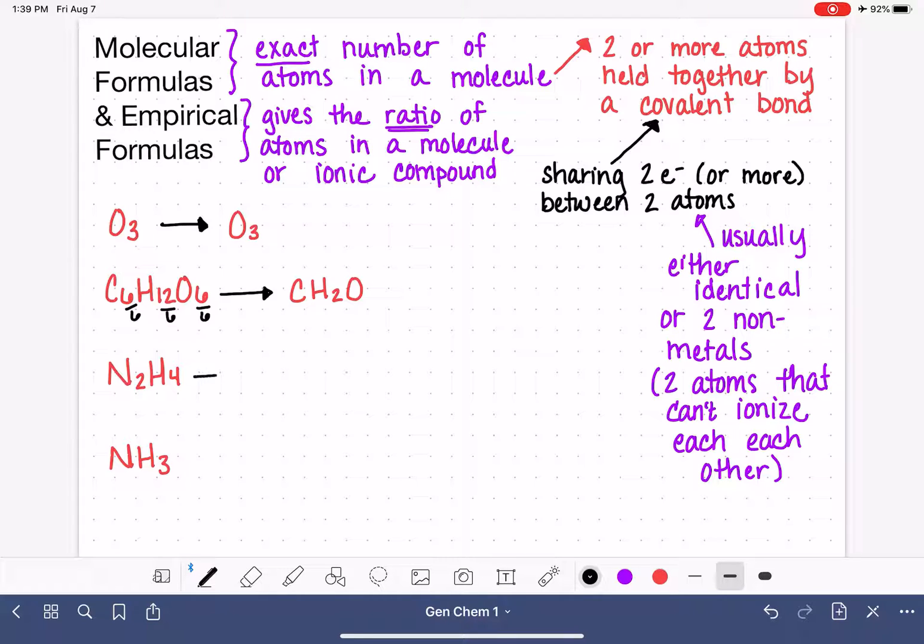For N2H4, same thing. We're looking for the smallest ratio between the nitrogen and the hydrogen atoms, which is going to come from dividing each one of these subscripts by two. And so that will give us the formula of NH2. That is the empirical formula. And then last but not least, down here, NH3, sometimes we cannot simplify them any more than they already are. Like in this case, NH3, if any one of the atoms in a molecule has a subscript of one, then it's already in its simplest form and it cannot be further simplified. So again, all of these on the left-hand side, these are all molecular formulas, and all of the ones on the right-hand side, these are all empirical formulas.